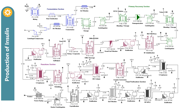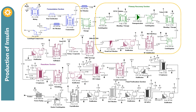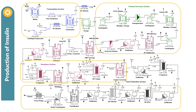Another example is the production of insulin, which is more complex. The process can be divided into four main sections: fermentation section, primary recovery section, reaction section, and final purification section. After fermentation, centrifugation is chosen to remove the insoluble. The separation steps are carried out many times with different separation processes to achieve the desired concentration and quality before being freeze-dried to obtain the final product.